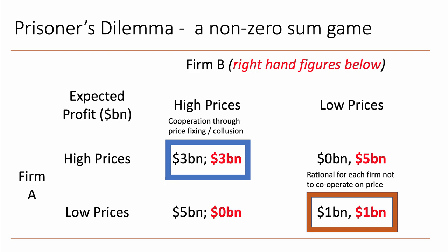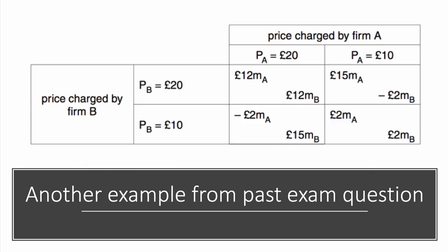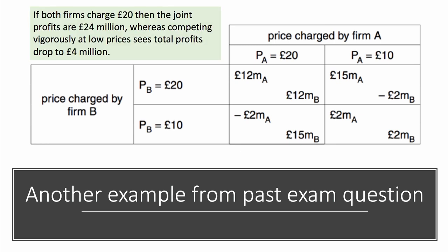High-price collusion leads to joint profit maximisation of £6 billion, but if both firms think it rational not to cooperate and engage in vigorous price competition, joint profits fall by £4 billion. A past exam question example shows two firms charging £20 or £10: the collusive equilibrium yields joint profits of £24 million, whereas competing vigorously at low prices drops total profits to just £4 million.